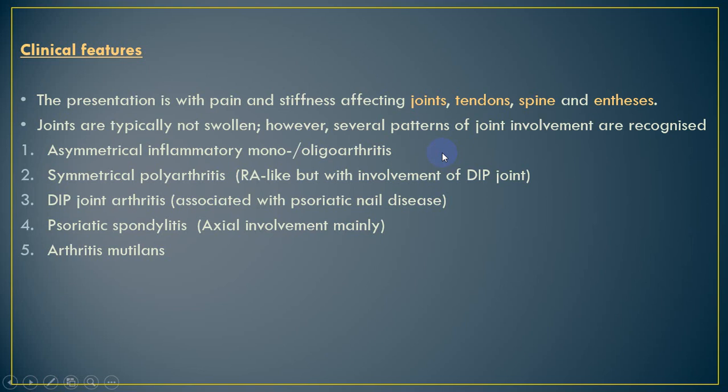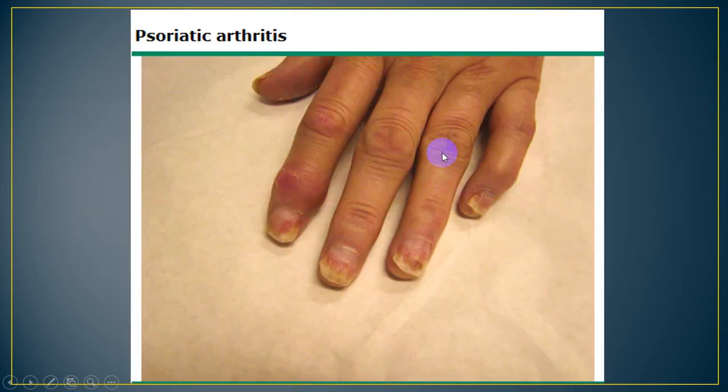Patients with psoriatic arthritis have five patterns of joint involvement. First, asymmetrical oligoarthritis of large joints of the lower limb. Second, a pattern similar to rheumatoid arthritis — symmetrical polyarthritis. Third, disease with characteristic distal interphalangeal joint arthritis. Fourth, psoriatic spondylitis mainly affecting the axial skeleton. And finally, arthritis mutilans with complete destruction of the joint.